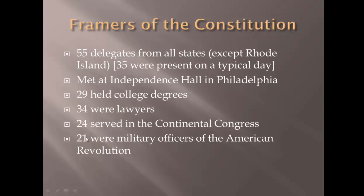When you look at who these framers were, 29 held college degrees, so at least half were highly educated. 34 of them were lawyers, some self-taught. 24 served in the Continental Congress under the Articles of Confederation, so they realized how little power they had under that governmental structure. 21 were military officers of the American Revolution. They fought against the king and certainly weren't going to create a government that simply looked like the king.